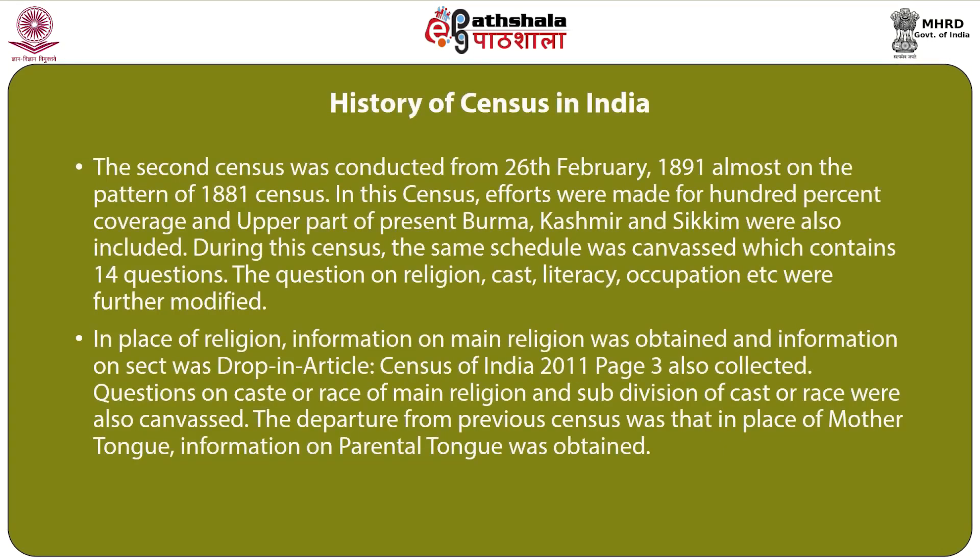In the 1891 census, the same schedule was canvassed containing 14 questions. The questions on religion, caste, literacy, and occupation were further modified. In place of religion, information on main religion was obtained and information on sect was dropped. Questions on caste or race of main religion and subdivision of caste or race were also canvassed. In place of mother tongue, information on parental tongue was obtained. The third continuous census was started on 1st March 1901, covering Baluchistan, Rajputana, Andaman Nicobar, Burma, Punjab, and remote areas of Kashmir. The census schedule of 1901 contained 16 questions, with changes including recording caste only for Hindus and Jains, and a new question on whether one knew English.